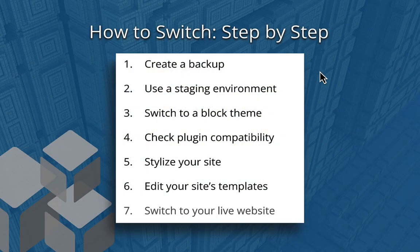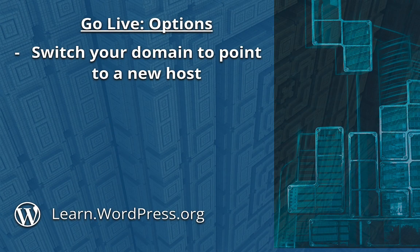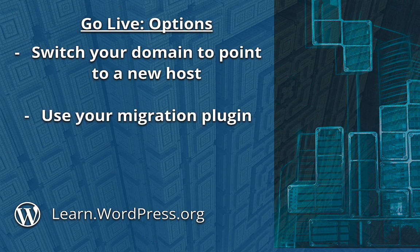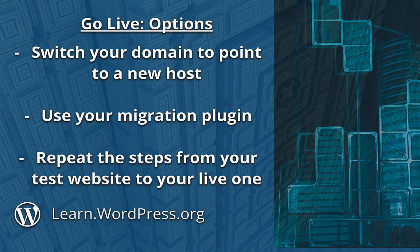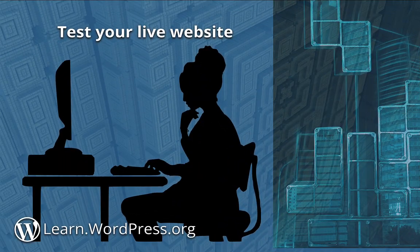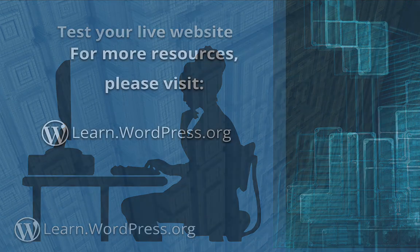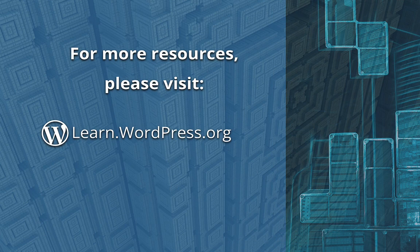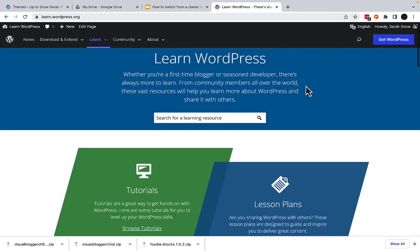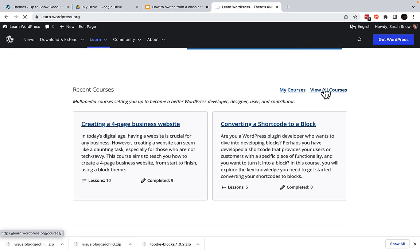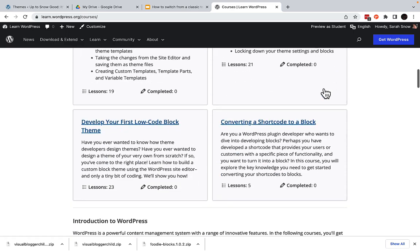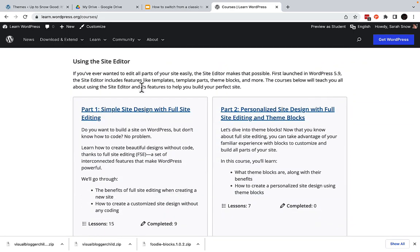Once you've completed these steps and are confident that your new theme is ready, you can proceed with the process of switching to your live site. You can do this by switching your domain to point to your new host, use your migration or backup plugin to migrate your entire website from your staging environment to your live website, or work on your live website step-by-step the same way that you did in your staging website. After switching, be sure to retest your entire site thoroughly to ensure everything is functioning as expected. Now you should have total control over how your website looks and feels with your new block theme. If you're new to block themes, please visit learn.wordpress.org to find additional helpful resources. Search for relevant video tutorials or take our site editing courses such as Simple Site Design. You can find these courses under the Courses section under the heading Using the Site Editor. Happy designing!